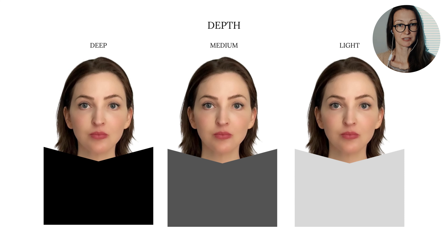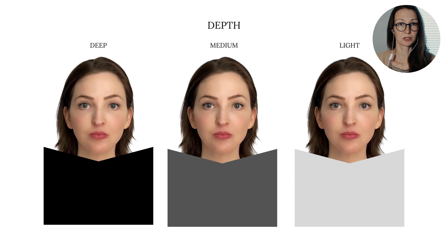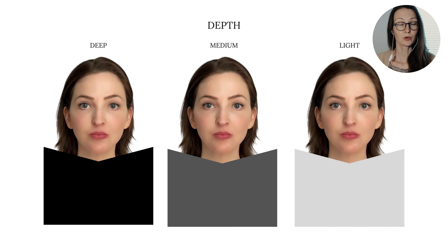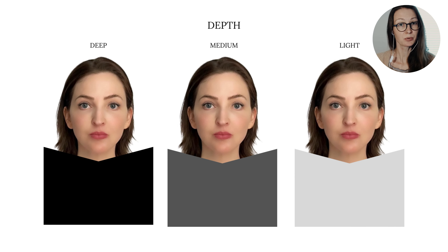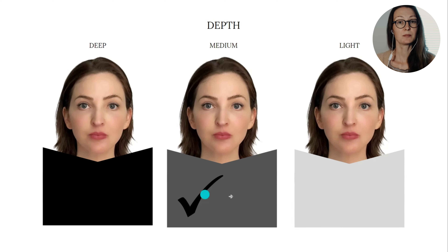Analyzing her depth, I want to find out whether she's deep, medium or light — meaning how light or dark her features are overall. This is not her natural hair color, but her original hair color is very close in depth to this one, which means she's not a deep depth type but rather a medium depth type.